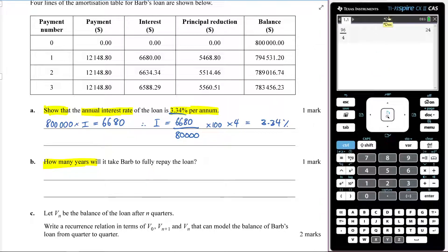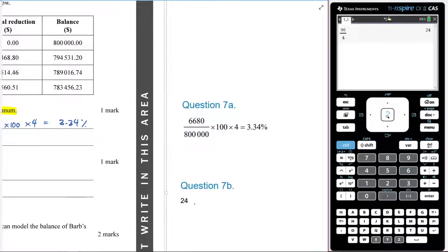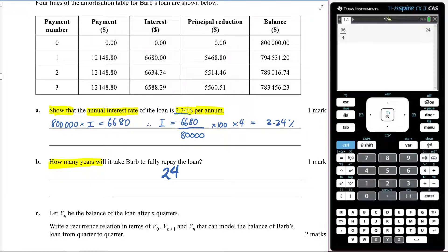So your answer here, how many years will it take? It will take 24 years to fully pay it off. And as you can see, the answer here is 24. So that is how you approach that question there.